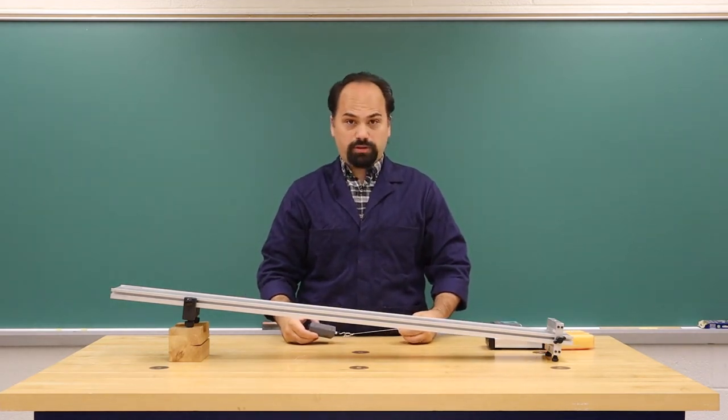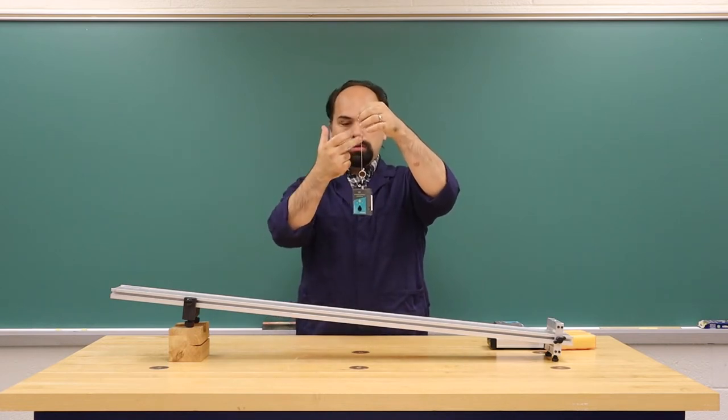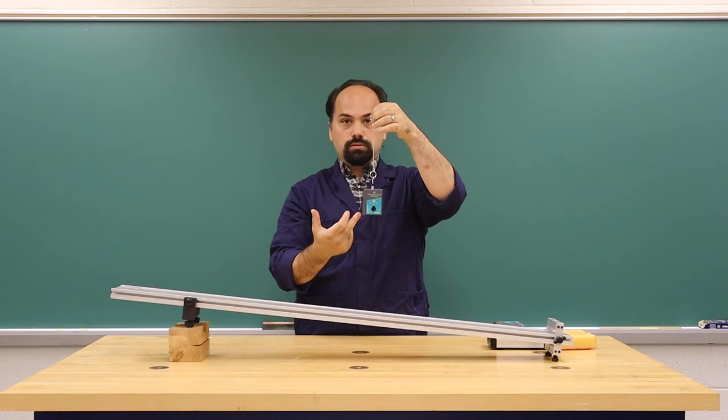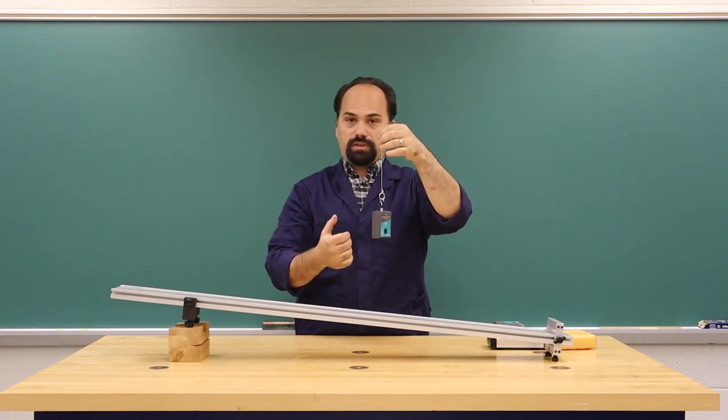In the second part of the lab we will be comparing the tension on a hanging sensor as it moves with constant velocity and not constant velocity.